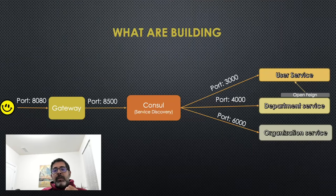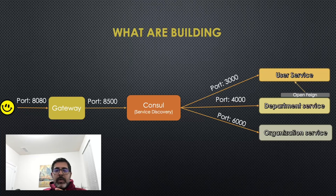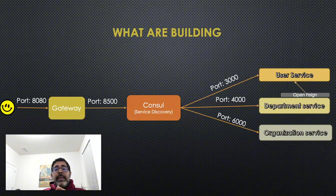We'll build three microservices: user service, department service, and organization service. For added flavor, I'm using OpenFeign to make one call from department service to user service. User service runs on port 3000, department service on 4000, and organization service on port 6000.